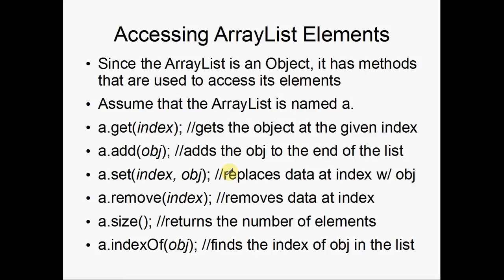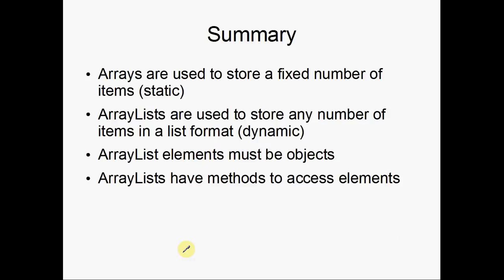To access elements, we'll assume the array list is called a and call some functions on it. We call a.get() with the index inside the parentheses. To add something to the list, simply do a.add() with the object we want. Another important one is a.size(), which returns the number of elements, and a.indexOf() will find the first index of that object. In summary, arrays are used to store a fixed number of items, and ArrayLists are used to store a dynamic number of items. ArrayList elements must be objects.